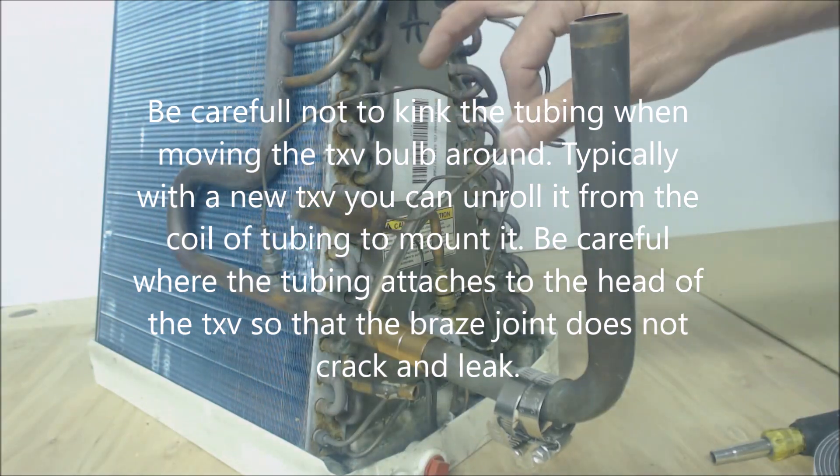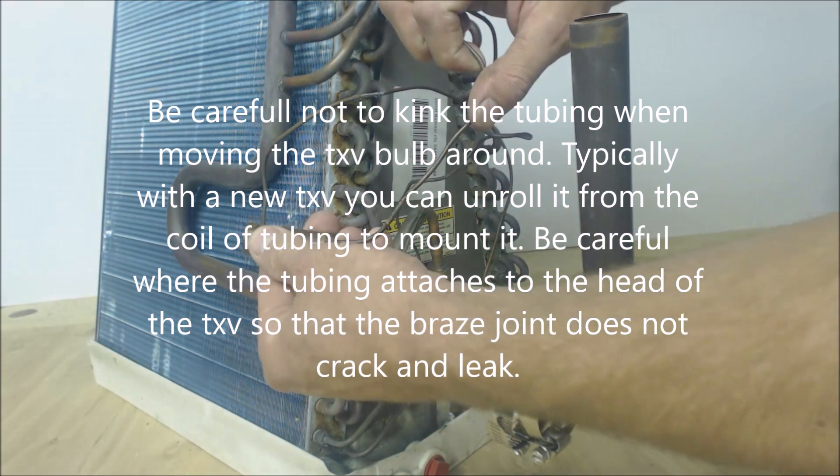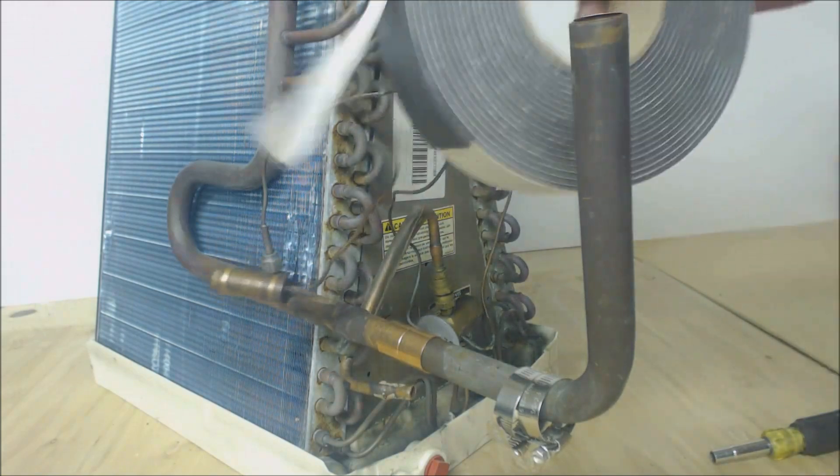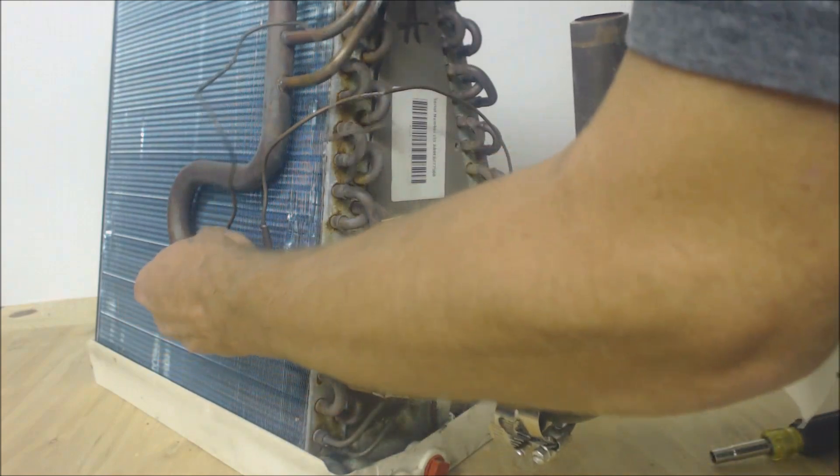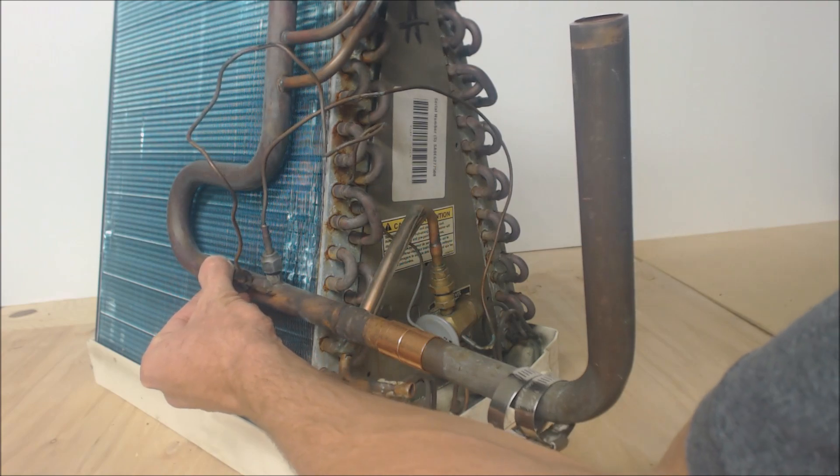Even inside the coil box, you're going to find that some manufacturers with factory installed TXVs, some are going to have the bulbs insulated and some are not. If you're doing it yourself, I would always typically recommend at least foam taping it, even if it's on the inside of the coil box, just to get the most accurate temperature reading possible.